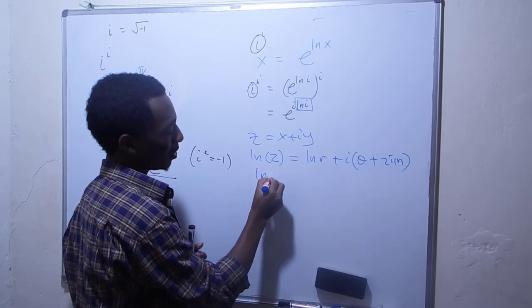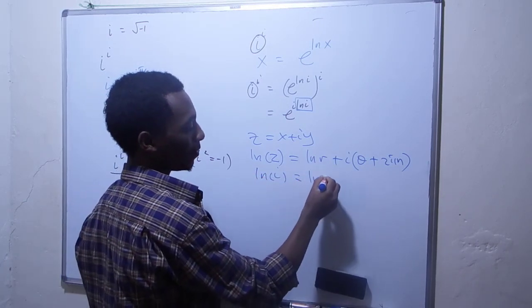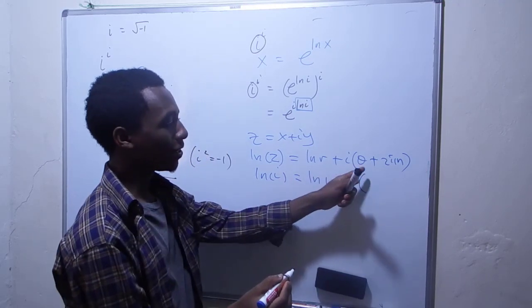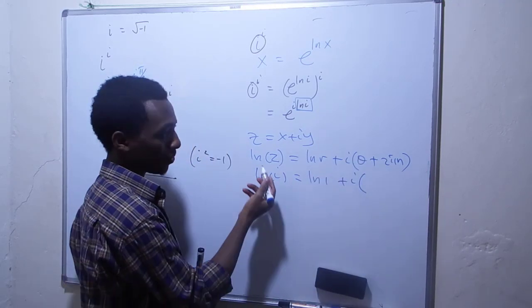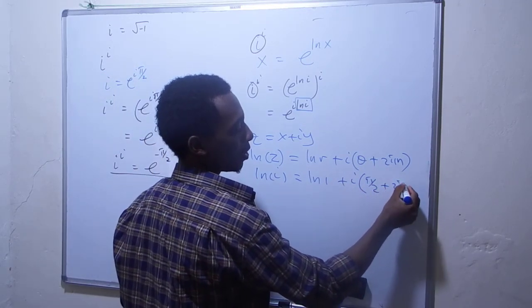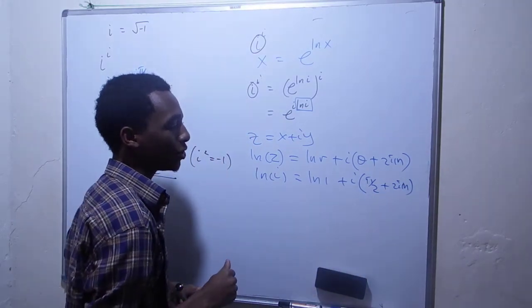The natural log of i: the modulus of i is 1, so we have natural log of 1 plus i times (π/2 plus 2πn), where π/2 is the principal argument of i.